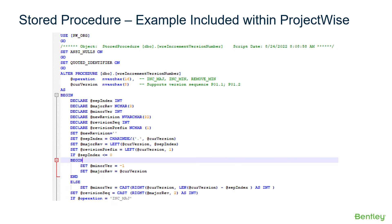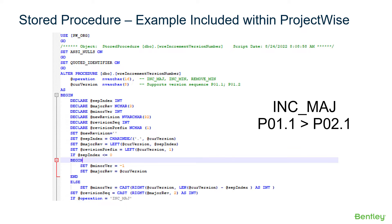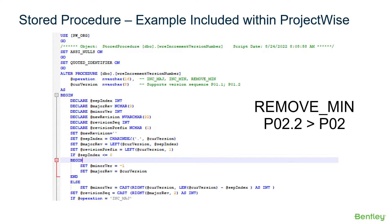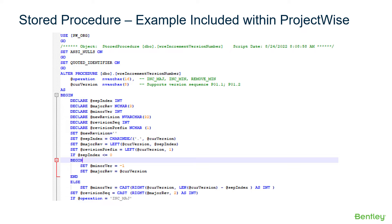Let's look at a stored procedure using the WRE Increment Version Number stored procedure that comes with ProjectWise. A stored procedure is simply a SQL Server scripting language that runs a function based on input and output. The purpose of this stored procedure is to increment either the major decimal value, minor decimal value, or to remove the minor decimal value from a version number. In the ALTER PROCEDURE statement, the name is WRE_Increment_Version_Number.